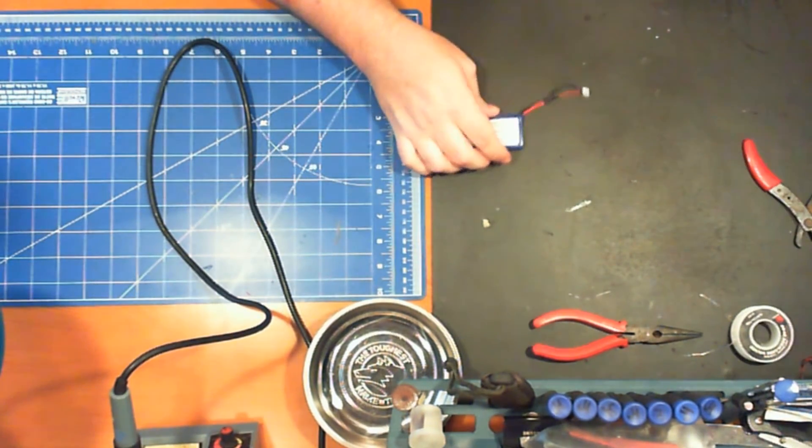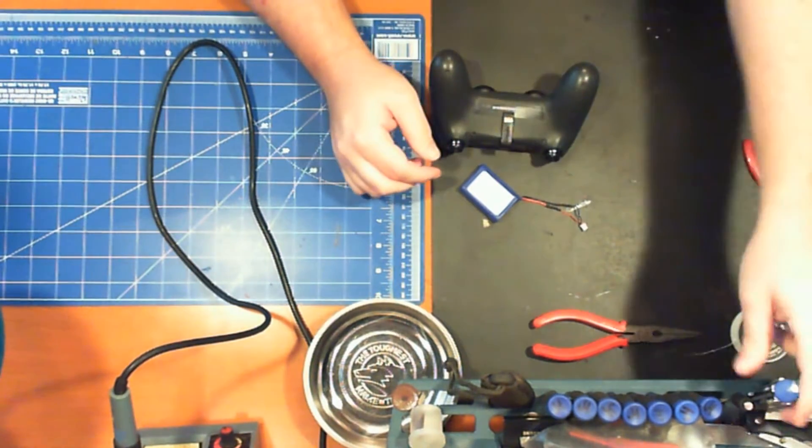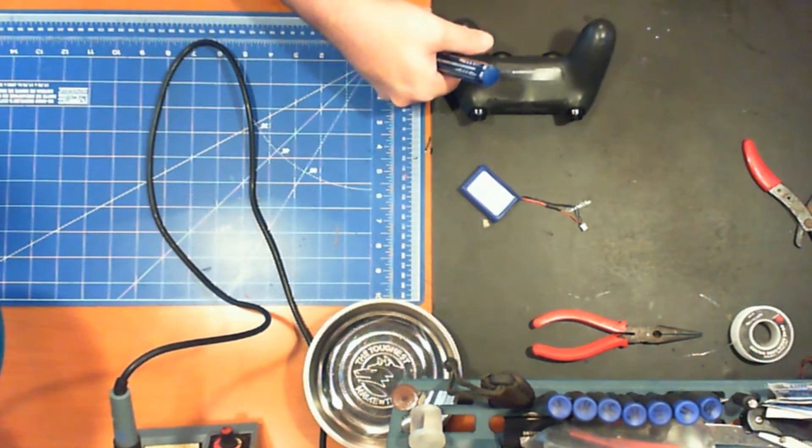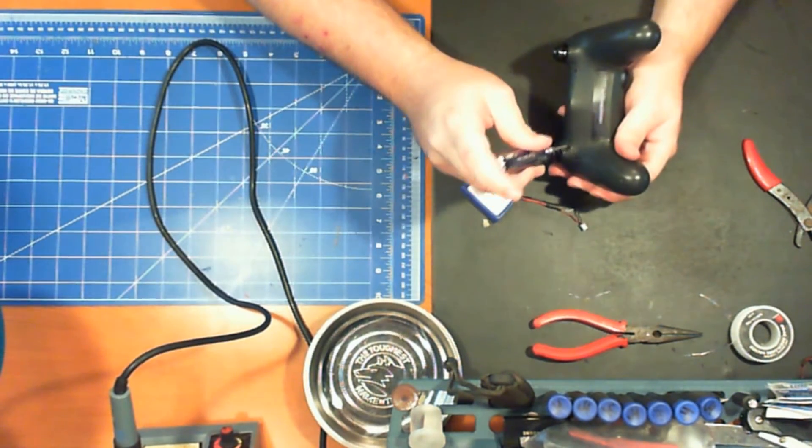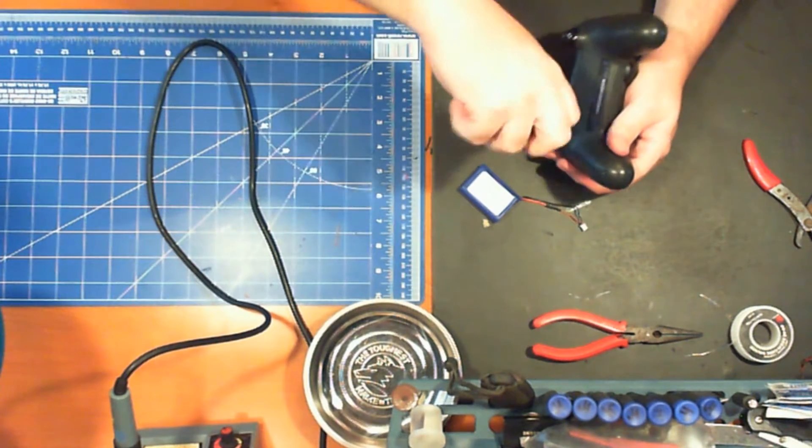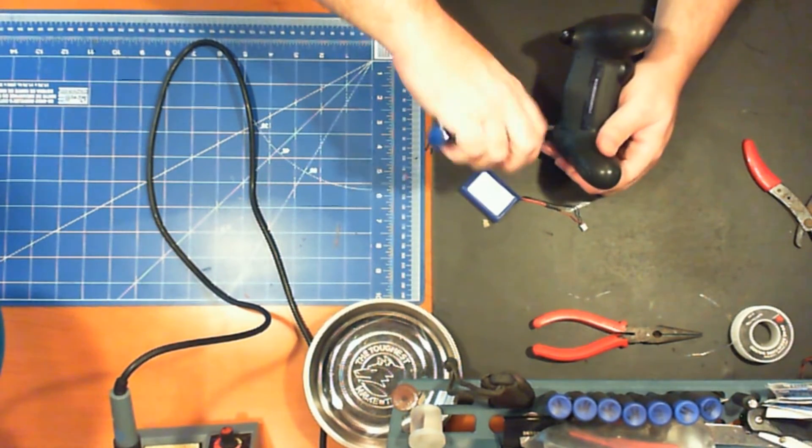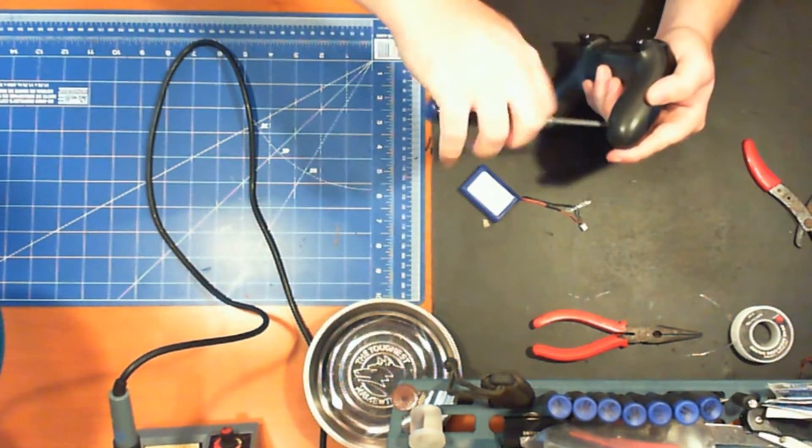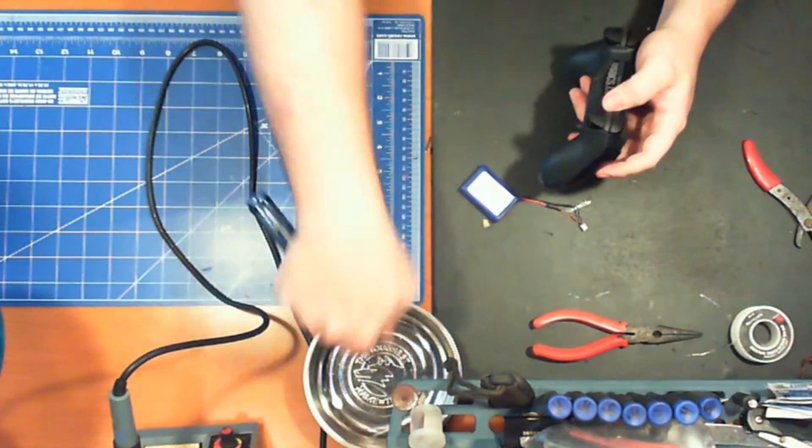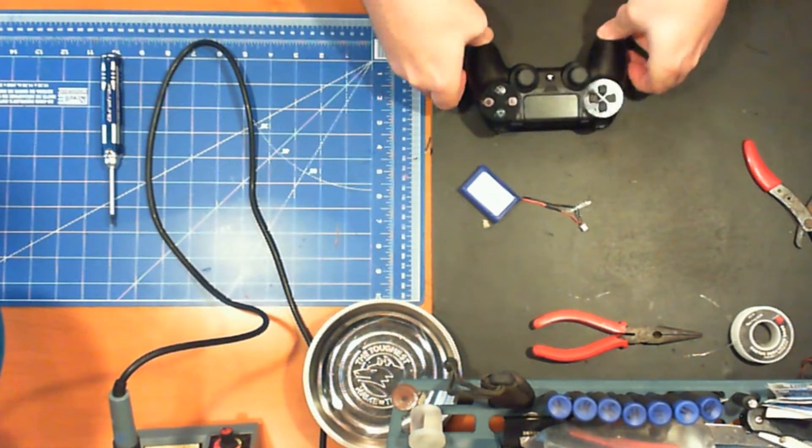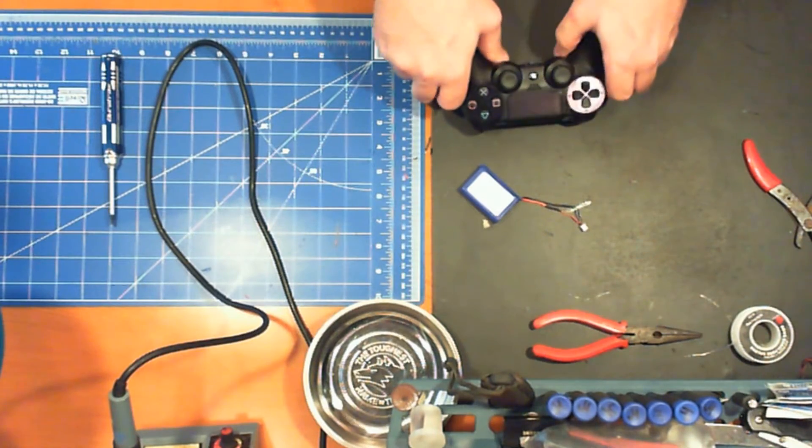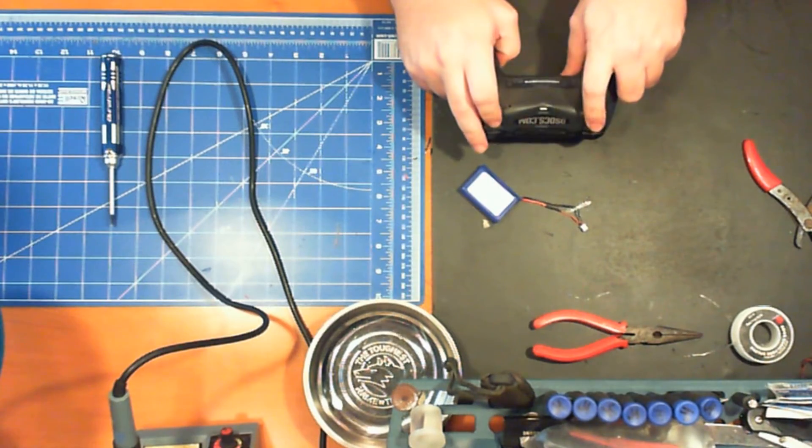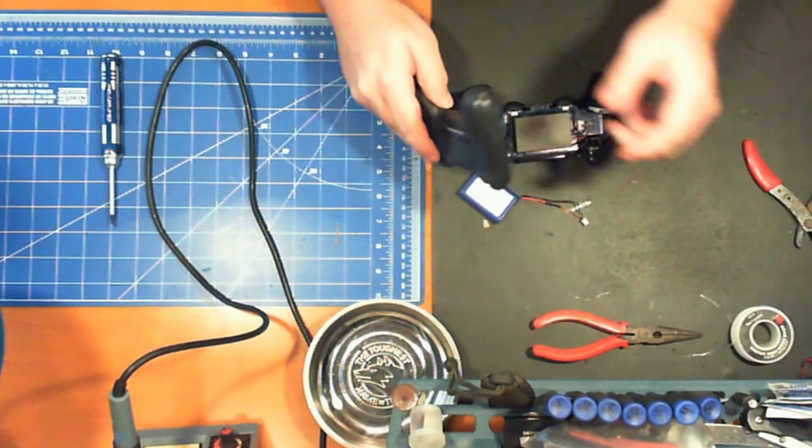And now for the actual controller part. There's a million videos online on how to effectively take these controllers apart, so I'm not going to get into too much detail. Basically, you've got your four screws on the back you're going to need to get out of there. It will be a little jarring opening this up. You'll have to apply a little more pressure than you might be comfortable with, but it'll come apart.